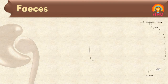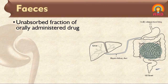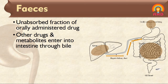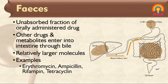The next route of elimination is faeces. The unabsorbed fraction of orally administered drug is eliminated through the faeces. Along with unabsorbed drug, other drugs and their metabolites can enter into the intestine through bile and be excreted through faeces. The liver actively transports drugs into bile by conjugation reactions, and relatively larger molecules are eliminated through bile and ultimately through faeces. Examples include erythromycin, ampicillin, rifampin, and tetracycline.